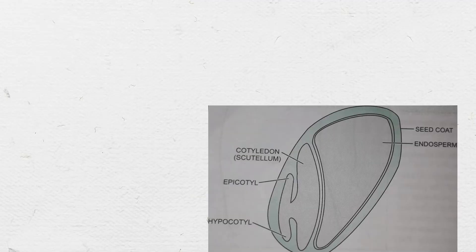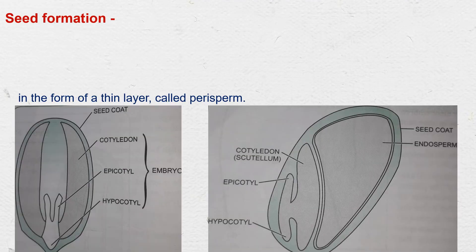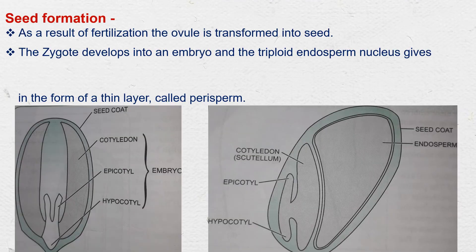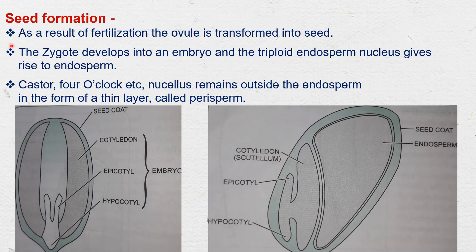Now we come to the next session of this chapter: seed formation. As a result of fertilization, the ovule is transformed into a seed. A seed may be said to be a fertilized and mature ovule developing in the ovary of a flower.